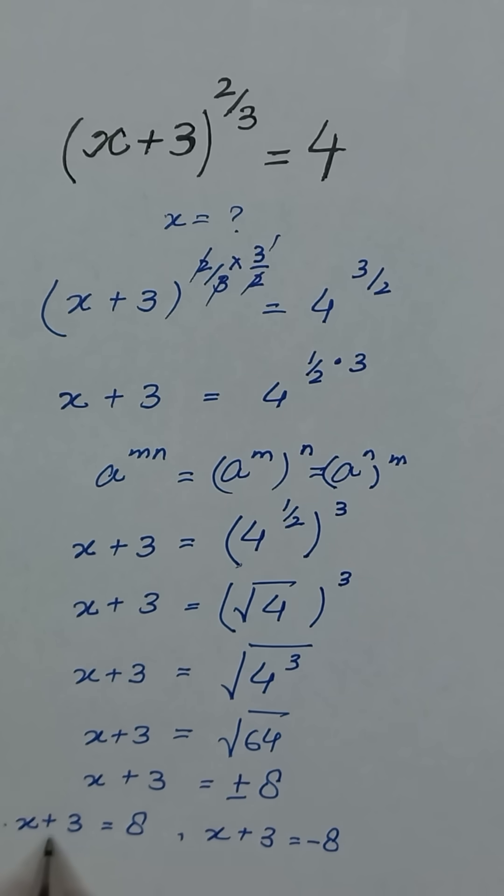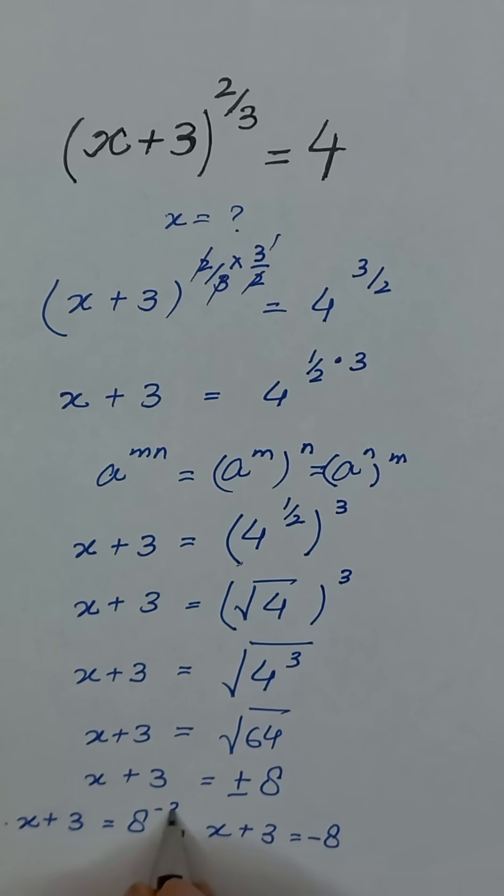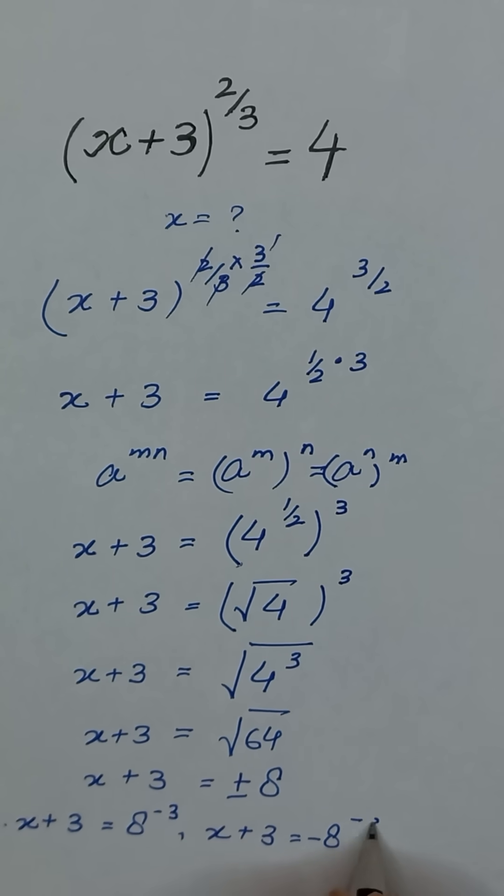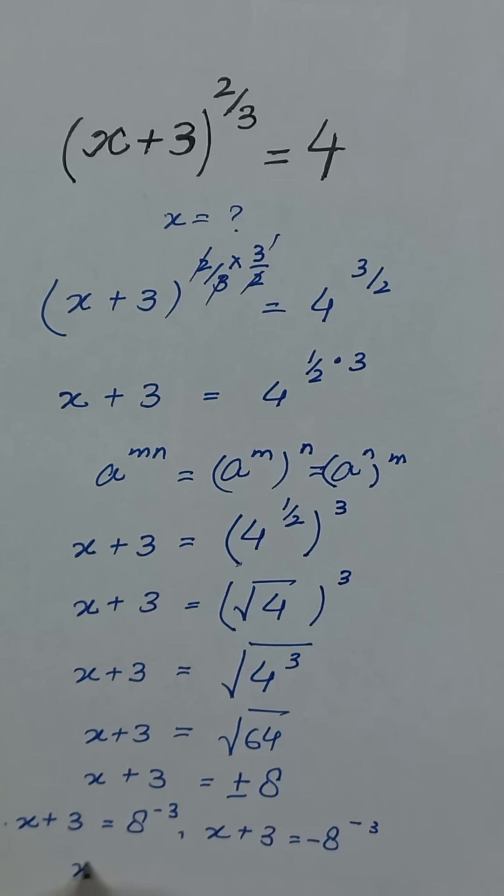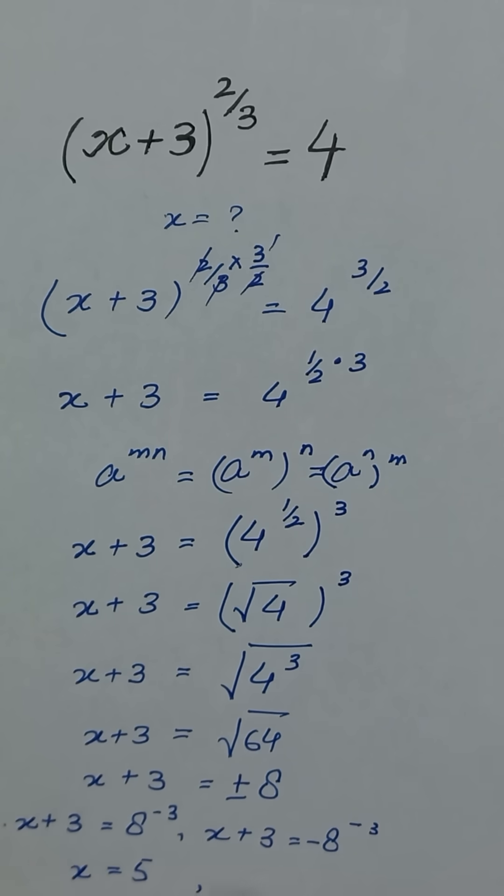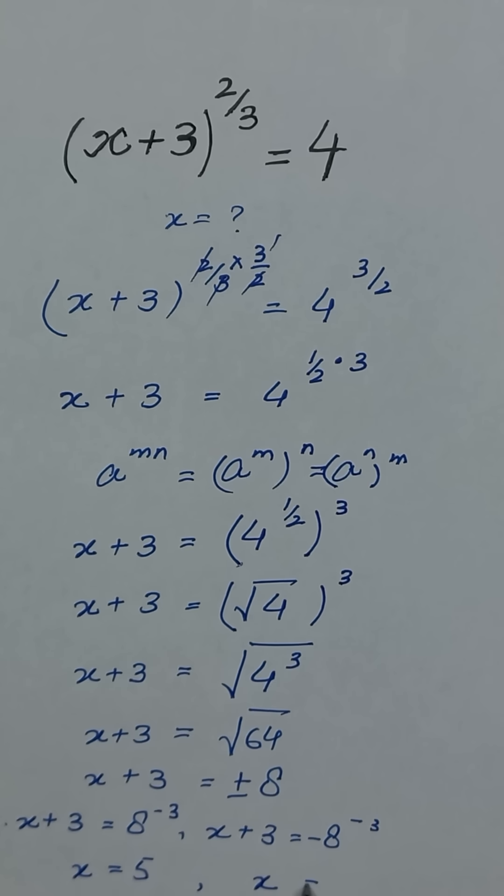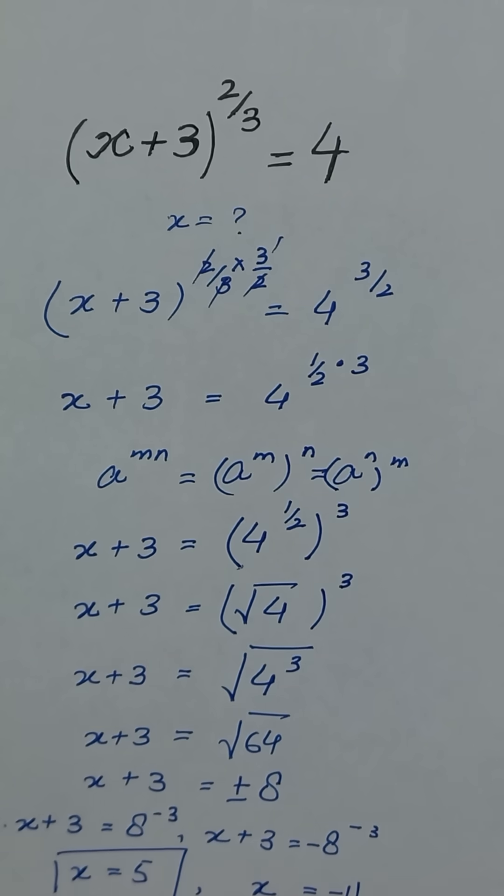When we will take this positive 3 to the right hand side, it will become negative 3. Similarly, it will become negative 3. So 8 minus 3 will be equal to 5. And in this case, x will be equal to minus 11. Thanks for watching.